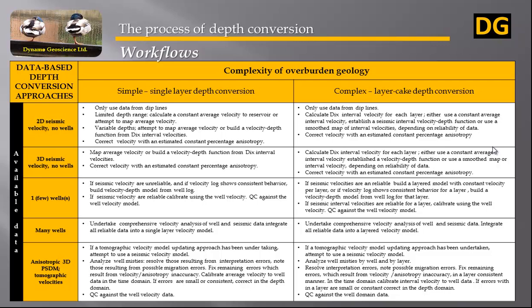This table shows five available data approaches in simple process versus complex process. For example, this table tells us workflow simple or complex steps in case of no available wells and 2D seismic velocity available, as displayed on first top approach.